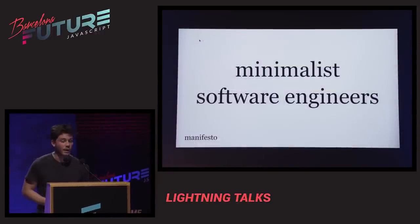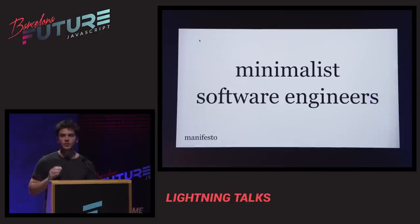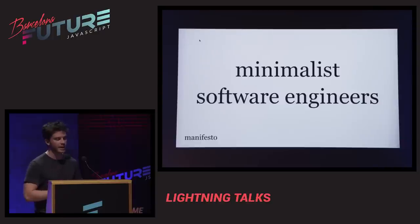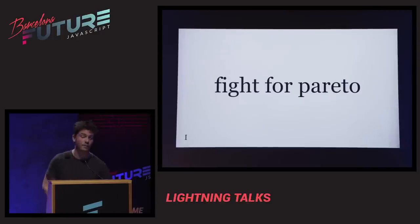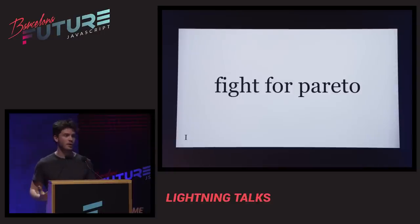My name is Pablo. My presentation is not so technical, but I think it's really important because it talks about decisions. We are engineers and our main job is to take the right decisions. This is minimalist software engineering — 10 guidelines to take better decisions as an engineer. The first one is fight for Pareto. The Pareto rule says that 20% of our efforts are going to give us 80% of the results, so we have to focus on finding our 20% that will create great impact.